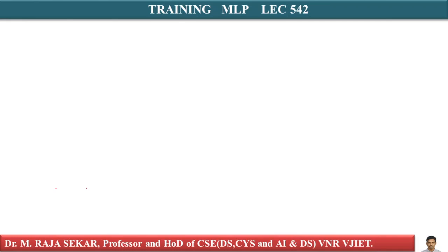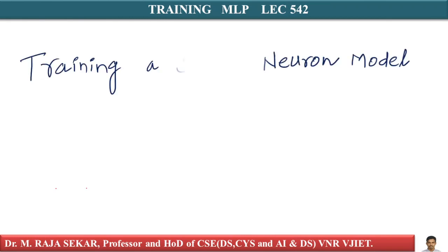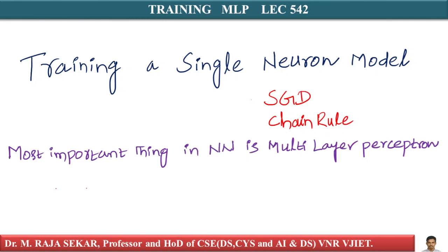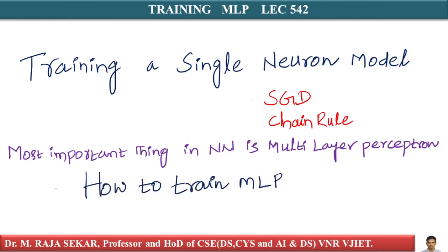Welcome to Rod Shaker Classes on Applied Data Science with Python. This is lecture number 542. In this lecture we will try to understand training multi-layer perceptron. In the previous video we learned how to train a single neuron model, revisited SGD, chain rule, and very basic calculus. The most important thing in neural networks is the multi-layer perceptron — this lecture and the next few are probably the most important in all of deep learning.